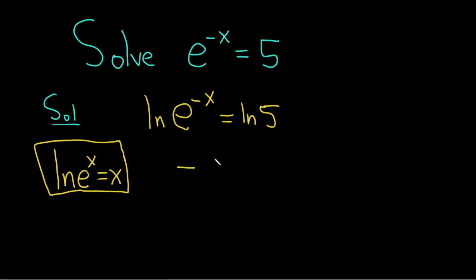And you're left with negative x equals the natural log of the number 5. We're looking for x and we're almost done. So x is being basically multiplied by a negative 1, so we simply divide both sides by the negative 1.